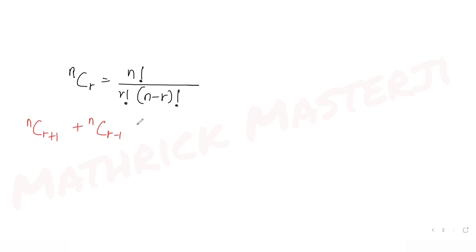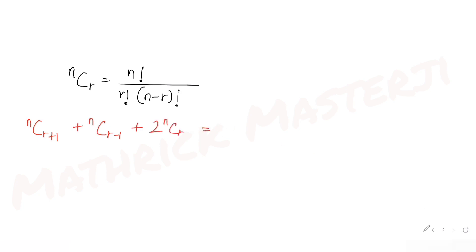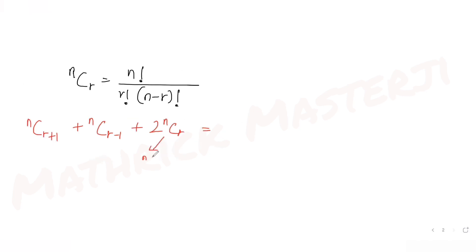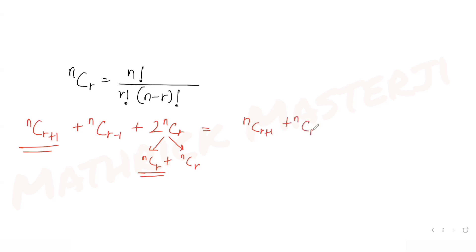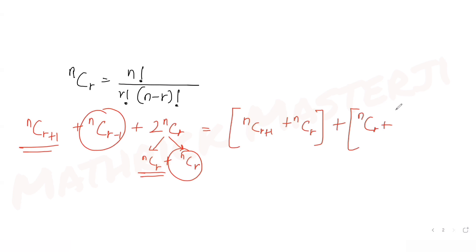What I can do here is split 2·nCr as nCr + nCr. Then I take nCr+1 together with one nCr, giving the bracket (nCr+1 + nCr), and for the other bracket I keep the remaining (nCr + nCr-1).